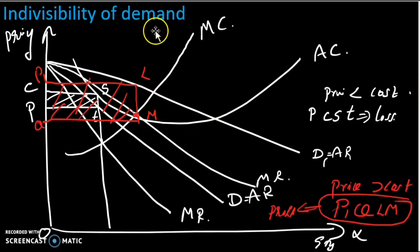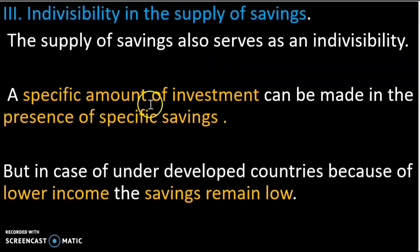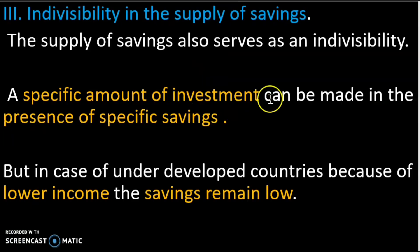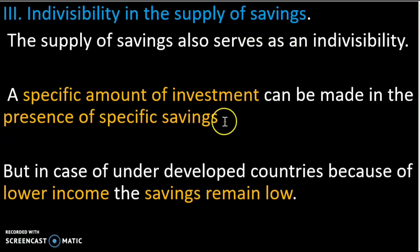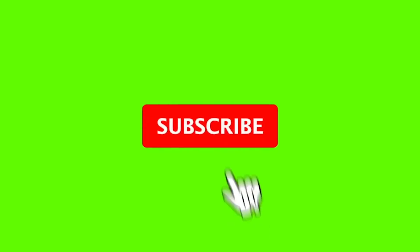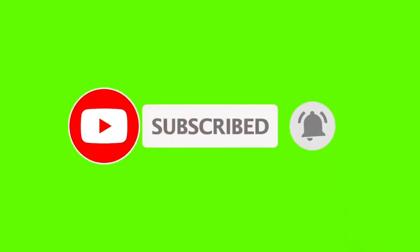Indivisibilities of demand come from the economy. Regarding Indivisibility of Supply and Savings: in a specific amount of investment, there is a specific amount of savings. In the economy, savings is less than investment due to low income, and savings is less because of low per capita income. Indivisibilities of demand come from investment.